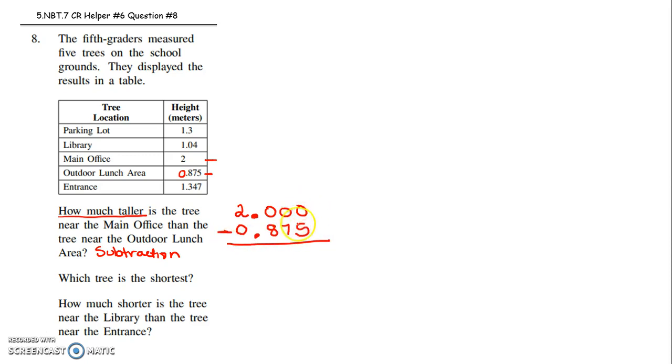And now I have to borrow way from over here. If I borrow way over here, that 2 becomes a 1, this becomes a 10. That allows me to borrow here. That 10 becomes a 9, this becomes a 10. That allows me to borrow from here. This 10 becomes a 9, and this becomes a 10.